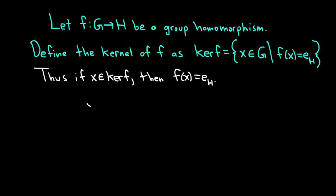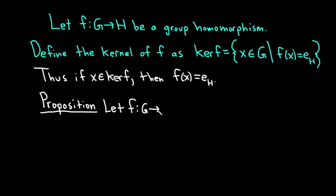Now we're going to do a very simple proof. I'll call it a proposition. So let f from G into H be a group homomorphism.